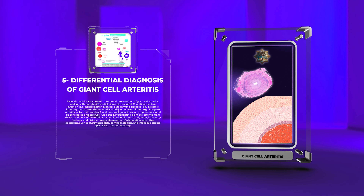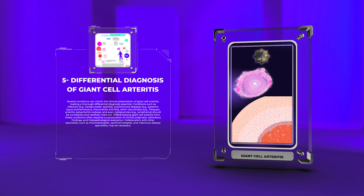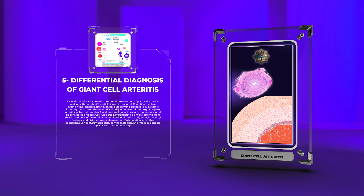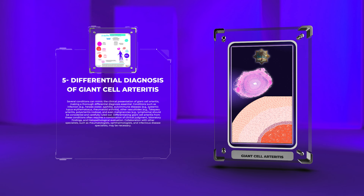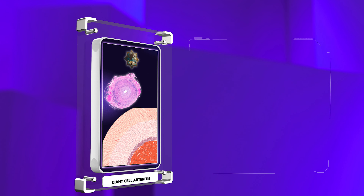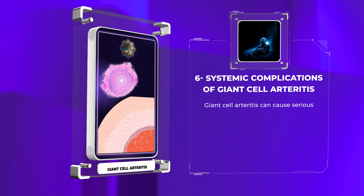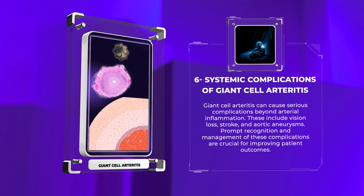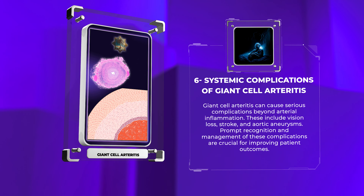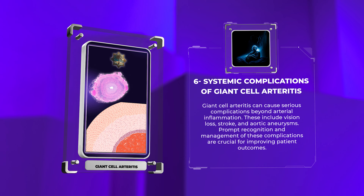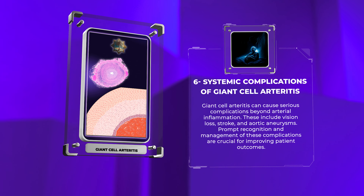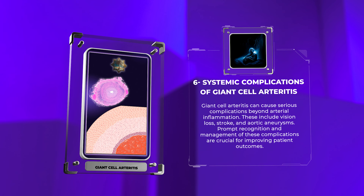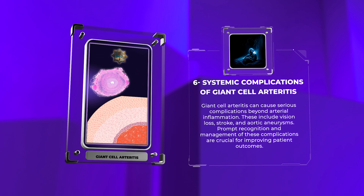Collaboration with other specialists, such as rheumatologists, ophthalmologists, and infectious disease specialists, may be necessary. Giant cell arteritis can cause serious complications beyond arterial inflammation, including vision loss, stroke, and aortic aneurysms. Prompt recognition and management of these complications are crucial for improving patient outcomes.